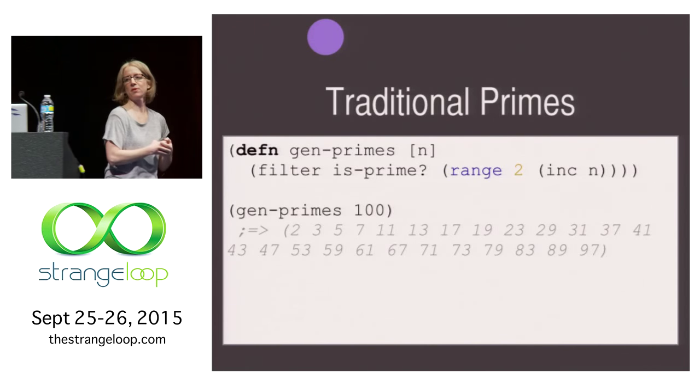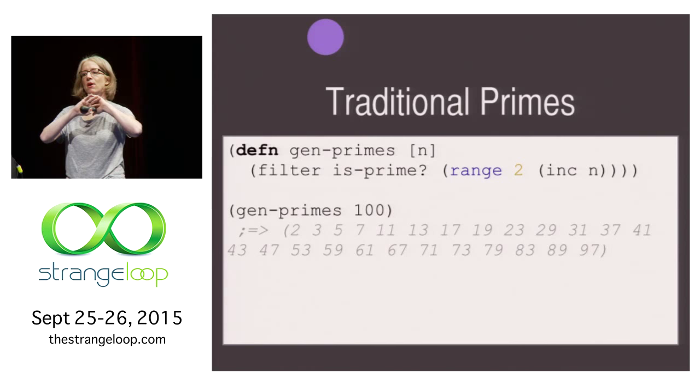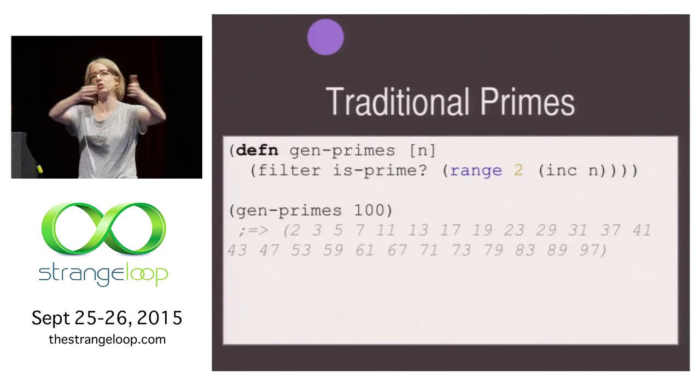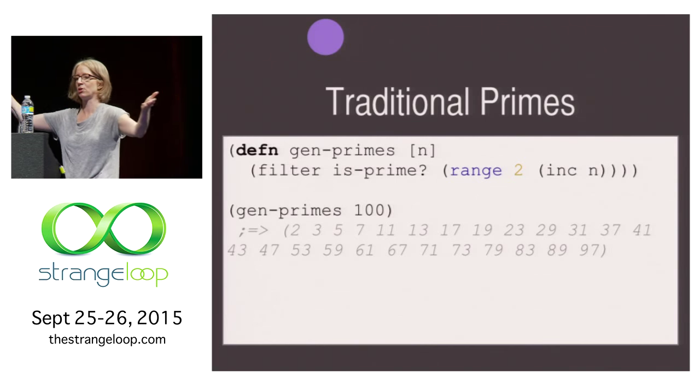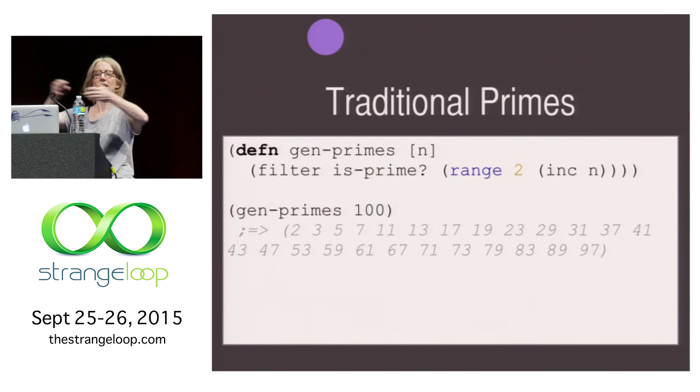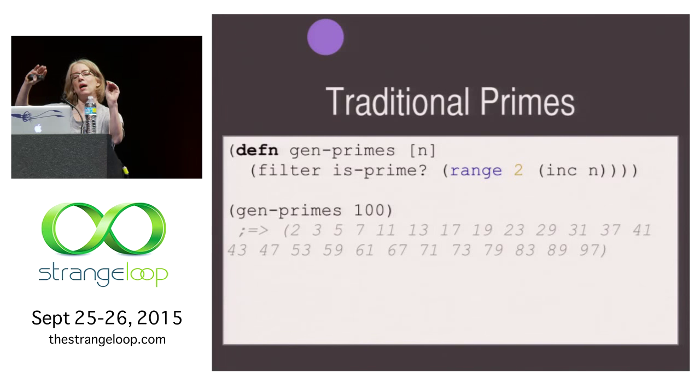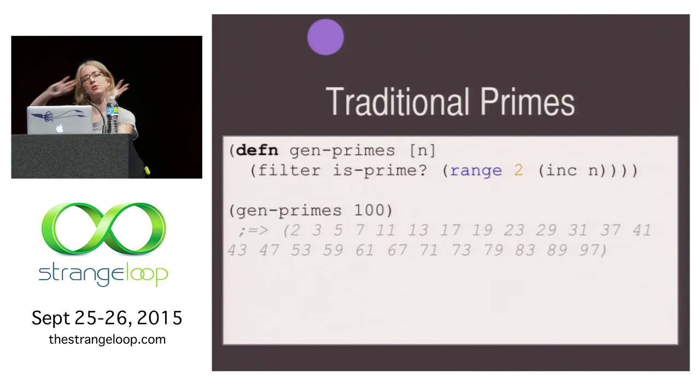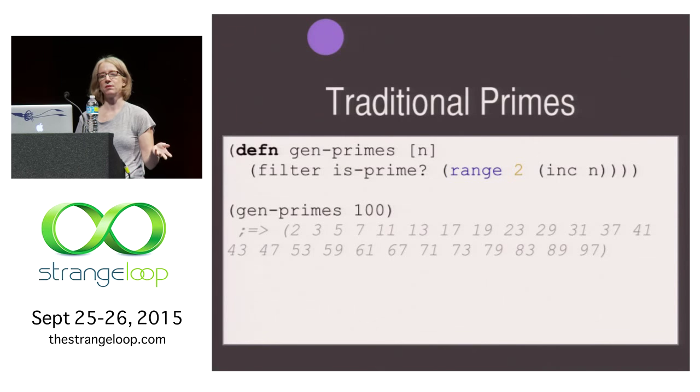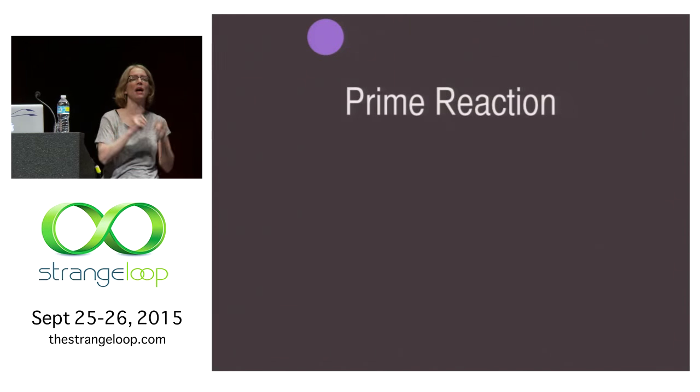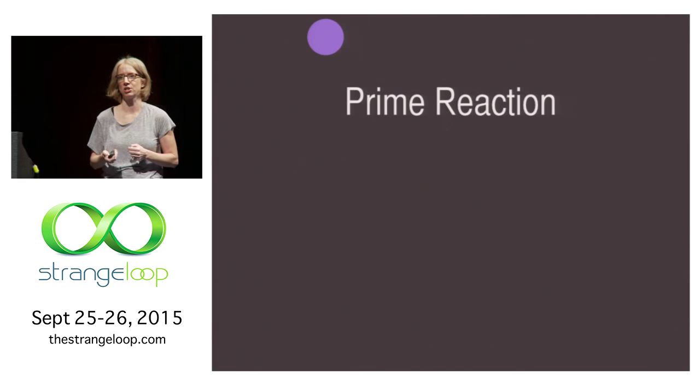We can go one step farther, and we can generate some primes. We can just take a range from 2 up to 100, generate all these numbers. Then we can map this function is prime over them and filter out the ones that are only prime. We're left with a list of primes up to 100. So yay! This is all very comfortable and familiar. But how do we do it with a prime reaction?